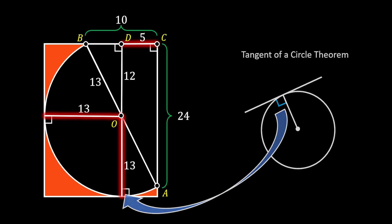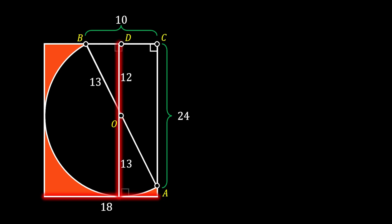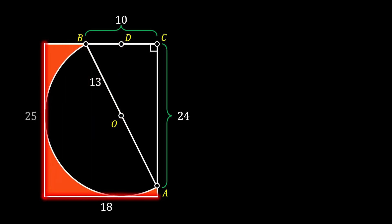Now, let's notice that our horizontal radius is equal to 13 and line DC is equal to 5. Sliding those two sides down, we form the base of our rectangle, which is equal to 18. For the height of our rectangle, the vertical radius is equal to 13 and line OD is equal to 12. Sliding it to the right, we can see that the height of our rectangle is equal to 25.